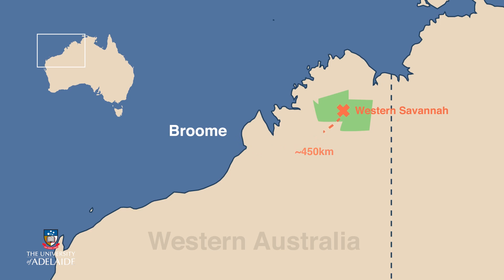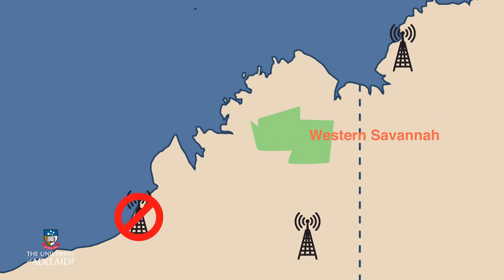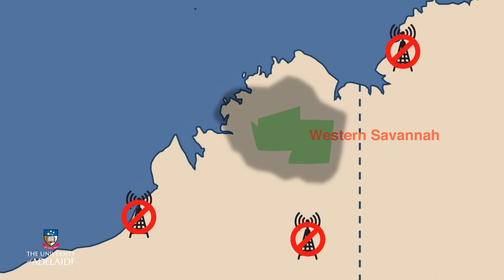A risk management plan would be appropriate to our Western Savannah case study. The project is sufficiently large, has a level of complexity, and several external stakeholders demanding risk compliance frameworks to be in place. A risk management plan would be considered an essential control tool to manage the completion of this project.